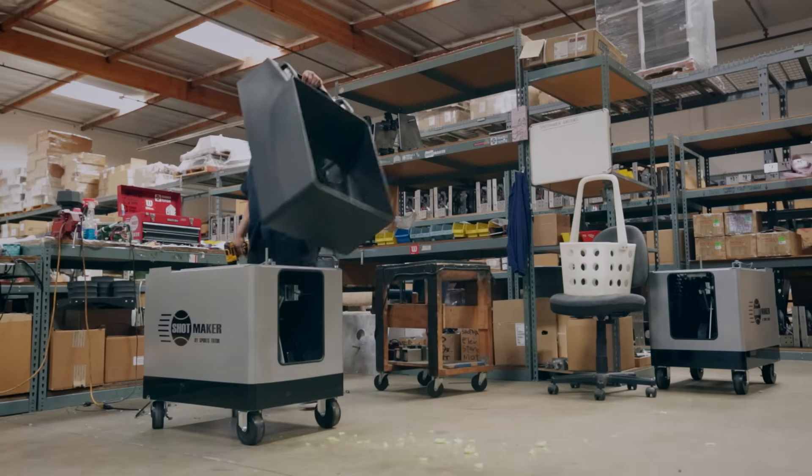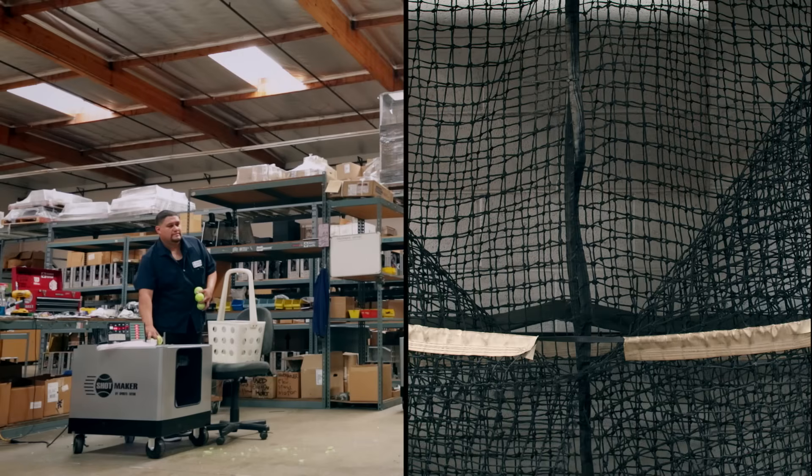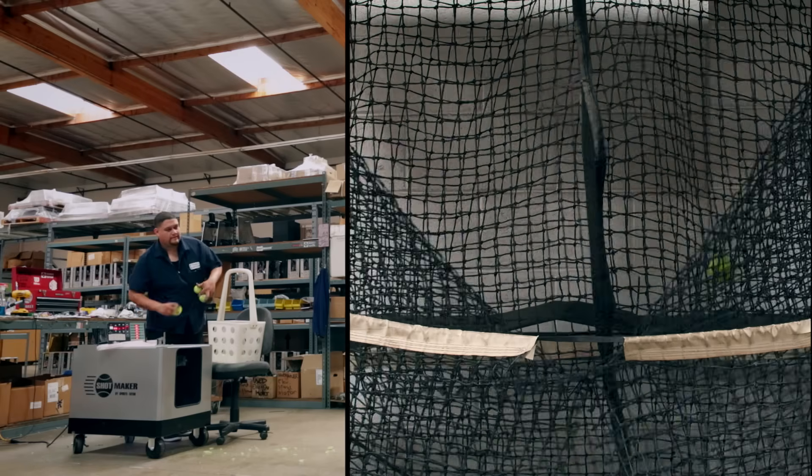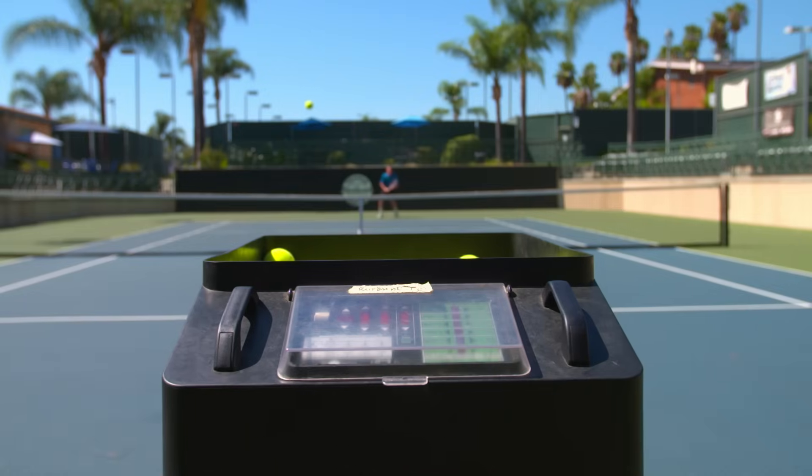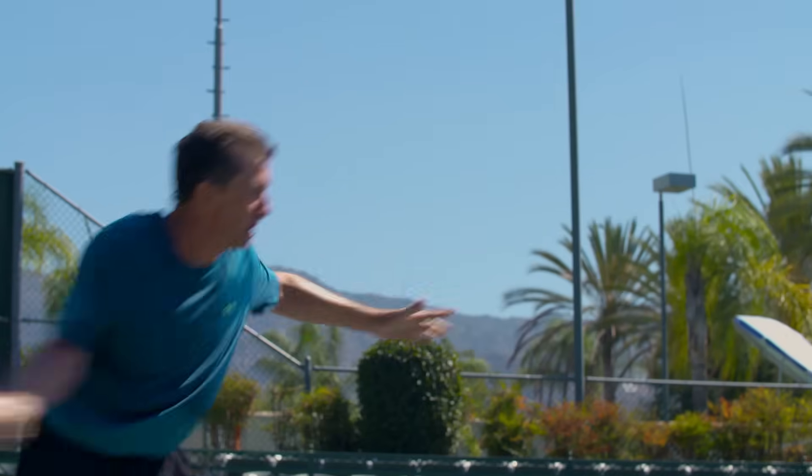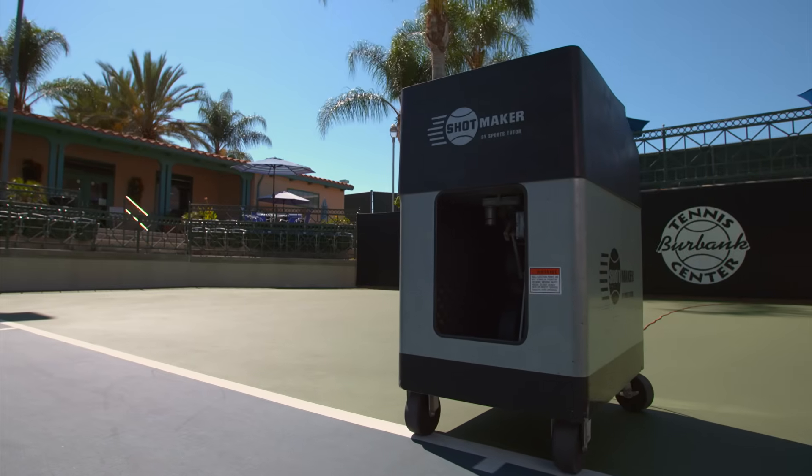This machine will now fire balls anywhere in the court with pinpoint accuracy. It can play with topspin, backspin and even hits a pretty mean lob. The tennis ball launcher is an unsung marvel of modern ingenuity. The perfect partner. It doesn't tire, it's there when you need it and it never criticizes your serve.